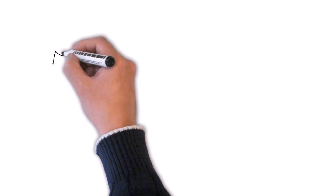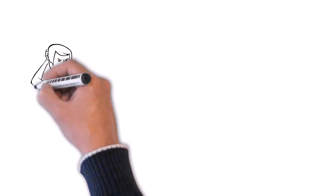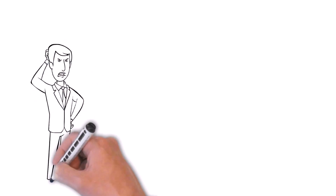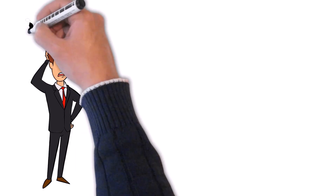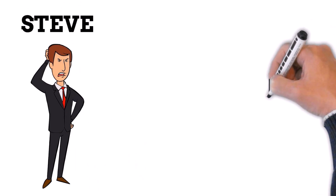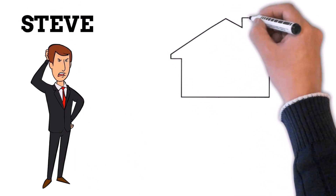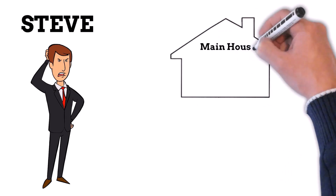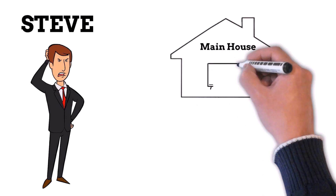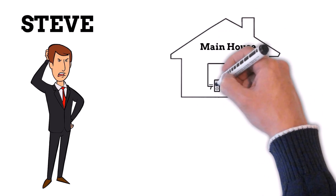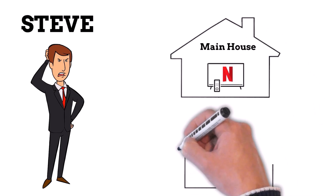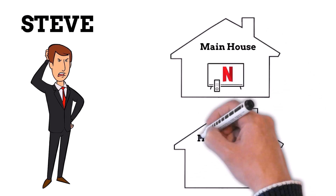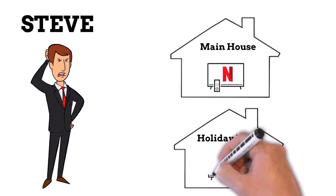To explain this more easily, I am going to use a character called Steve, but the reason I am making this video now is I too have just faced this problem. Steve has his main house, where he spends ten months or so of the year, and a holiday home which he rents for a couple of summer months. At both these separate locations, he, as the Netflix account holder, wants to be able to watch his Netflix shows.